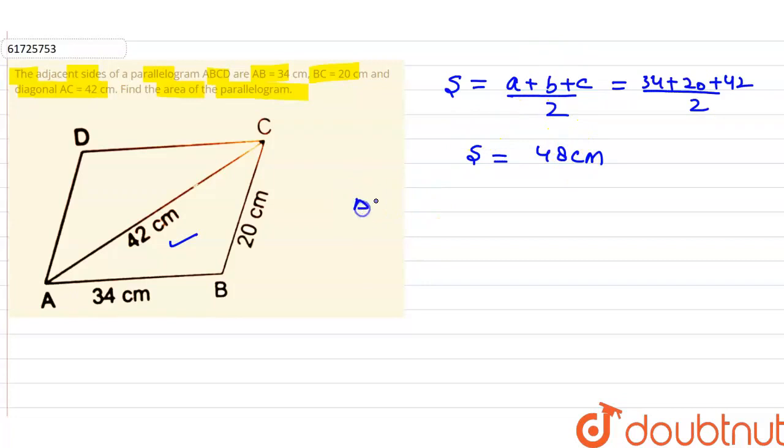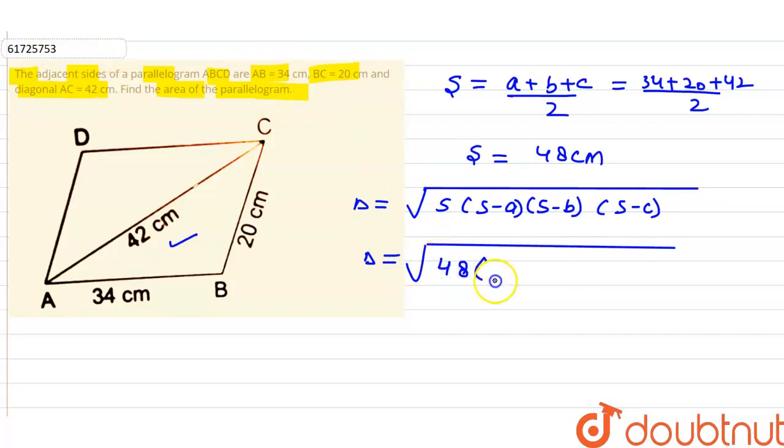Now the area delta, what is the formula? Delta is equal to square root of s into s minus a multiplied by s minus b multiplied by s minus c. So delta is square root of 48 multiplied by 48 minus 34 which is 14, 48 minus 20 which is 28, and 48 minus 42 which is 6.